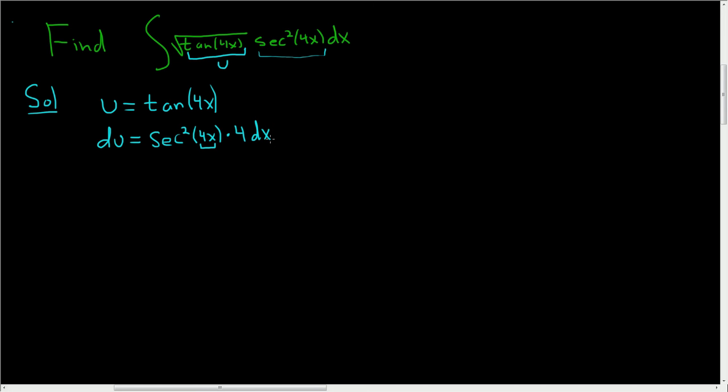Now, we almost have what we want. Here we have secant squared of 4x dx, but here we have the extra 4. So we'll divide by the 4. So we get du over 4 equals, and then we have secant squared of 4x dx.